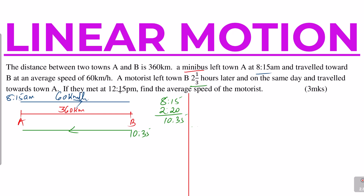They met at 12:15, so we can assume they met somewhere between A and B — that being the meeting point. We are supposed to find the average speed of the motorist.